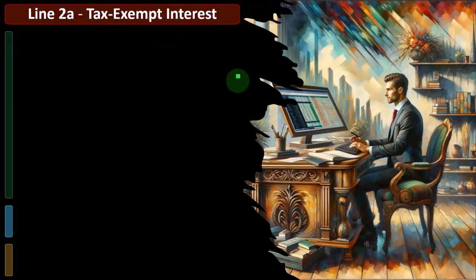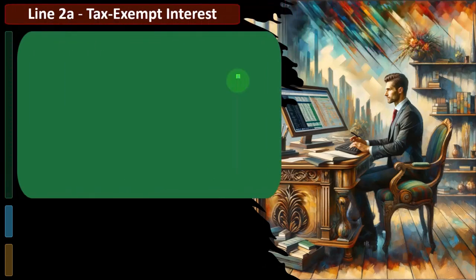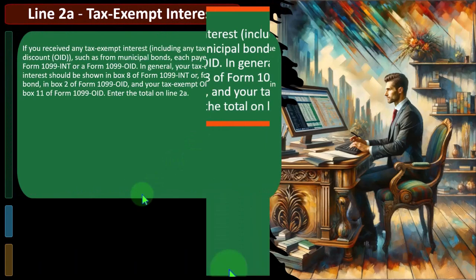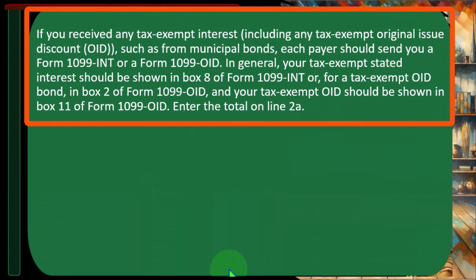Line 2A covers tax-exempt interest. If you receive any tax-exempt interest, including any tax-exempt original issue discount (OID) such as from municipal bonds, each payer should send you a Form 1099-INT or a Form 1099-OID.